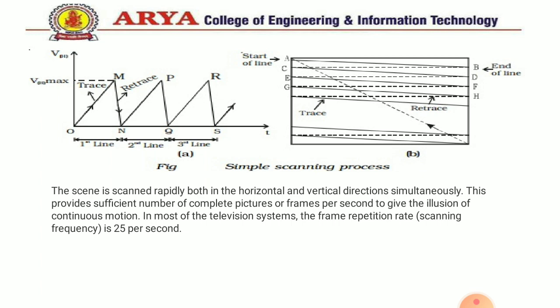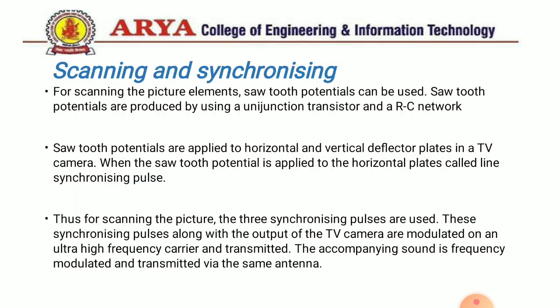One by one, all lines are scanned using the electron beam. The scene is scanned rapidly both in horizontal and vertical directions simultaneously. This provides a sufficient number of complete pictures or frames per second to give the illusion of continuous motion. In most television systems, the frame repetition rate is 25 frames per second.